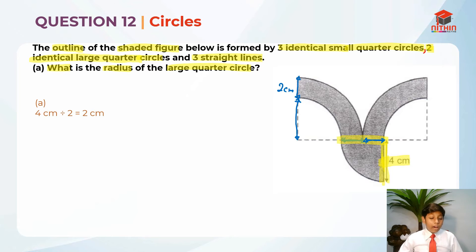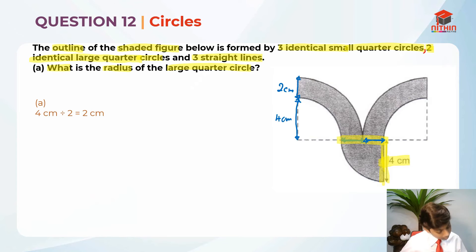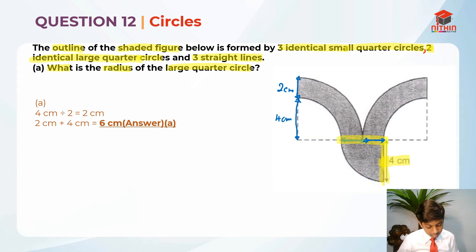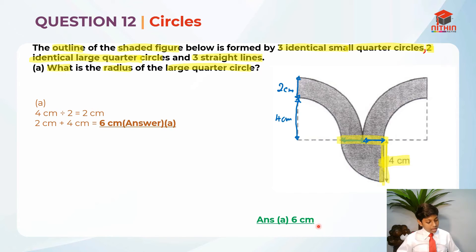Now we know that the small quarter circle's radius is 4cm. So we just need to take 2cm plus 4cm, which gives us 6cm. So 6cm is the answer for part A. Now that we have done part A, let's move on to part B.